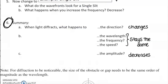Checking your answers to the summary: when light diffracts, what happens? Again, I'm saying light, but we could really mean sound waves or water waves — we're grouping those all together. When these waves diffract, what happens to the direction? The direction is going to change — that's the bending effect. What happens to the wavelength, the frequency, and the speed? All of those are going to stay the same. I want to contrast this to refraction, where the wavelength and speed did change as the wave passes into a new medium.